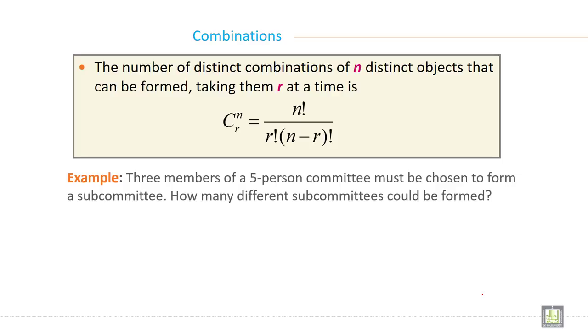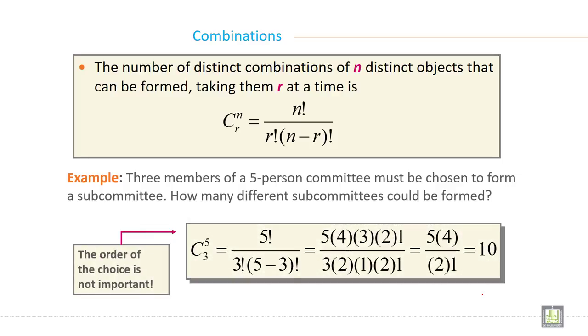Three members of a five person committee must be chosen to form a subcommittee. How many different subcommittees could be formed? How many possibilities? So the order of the choice is not important. C5,3 equals 5 factorial divided by 3 factorial into 5 minus 3 factorial. So if you solve, there are total 10 possibilities that you can frame a subcommittee consisting of three members.